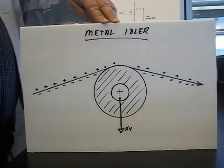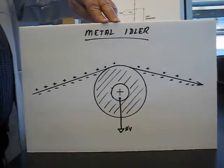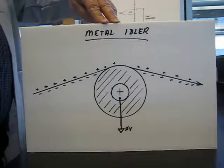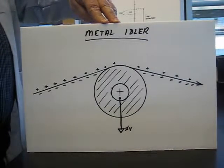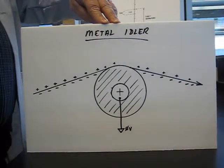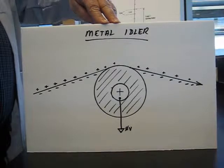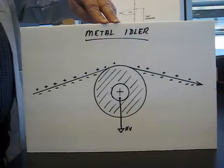Static electricity is a big problem in the converting industry and normally we're processing insulating webs polyethylene polypropylene and so on there's a lot of static that can be generated.